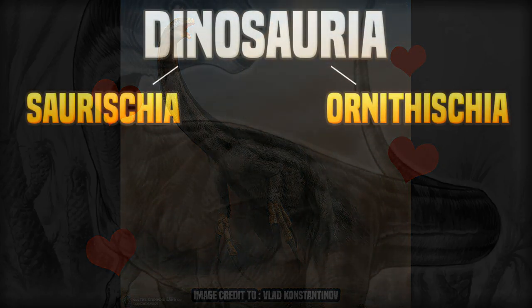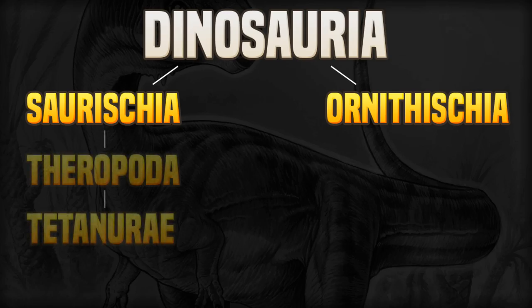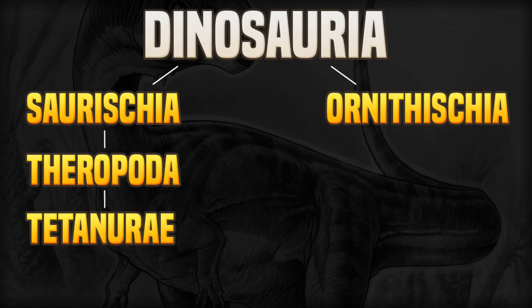Before we get started on the dinosaur itself, it's worth also mentioning a group called Tetanurae. This is a group of theropods, which are in turn a group of Saurischians. Tetanurae contains most theropods and is defined as ones more closely related to modern birds than they are to Ceratosaurus. This includes dinosaurs like Tyrannosaurus rex — Tyrannosaurus rex is a member of Tetanurae. With that out of the way, let's talk about the dinosaur itself.